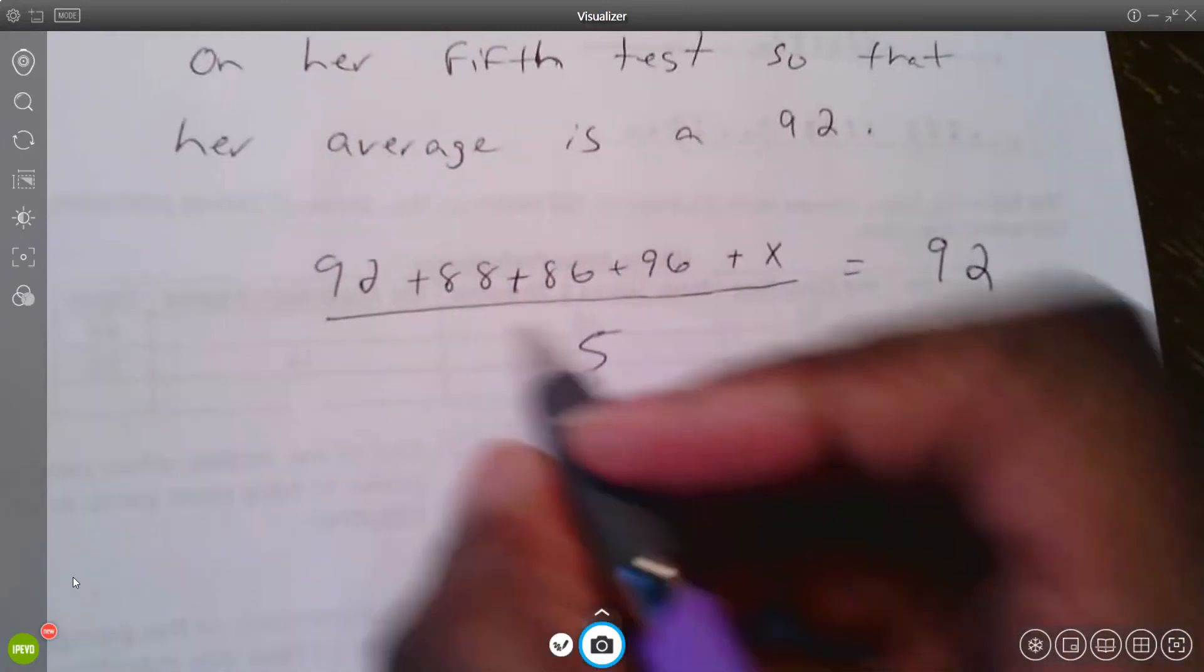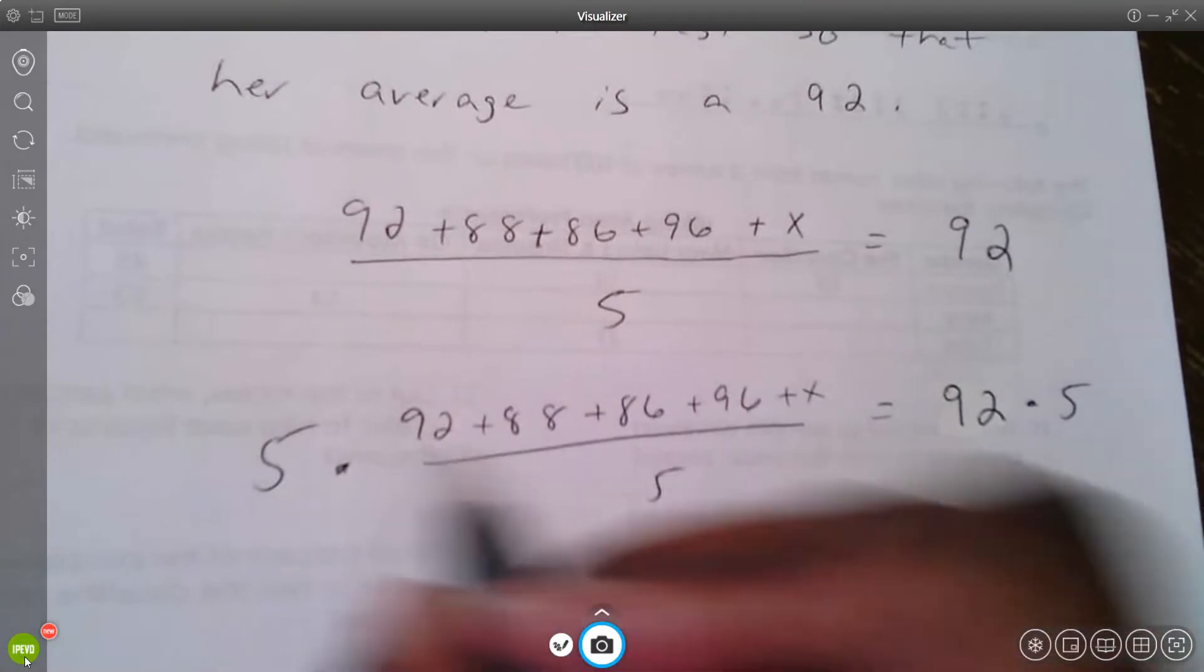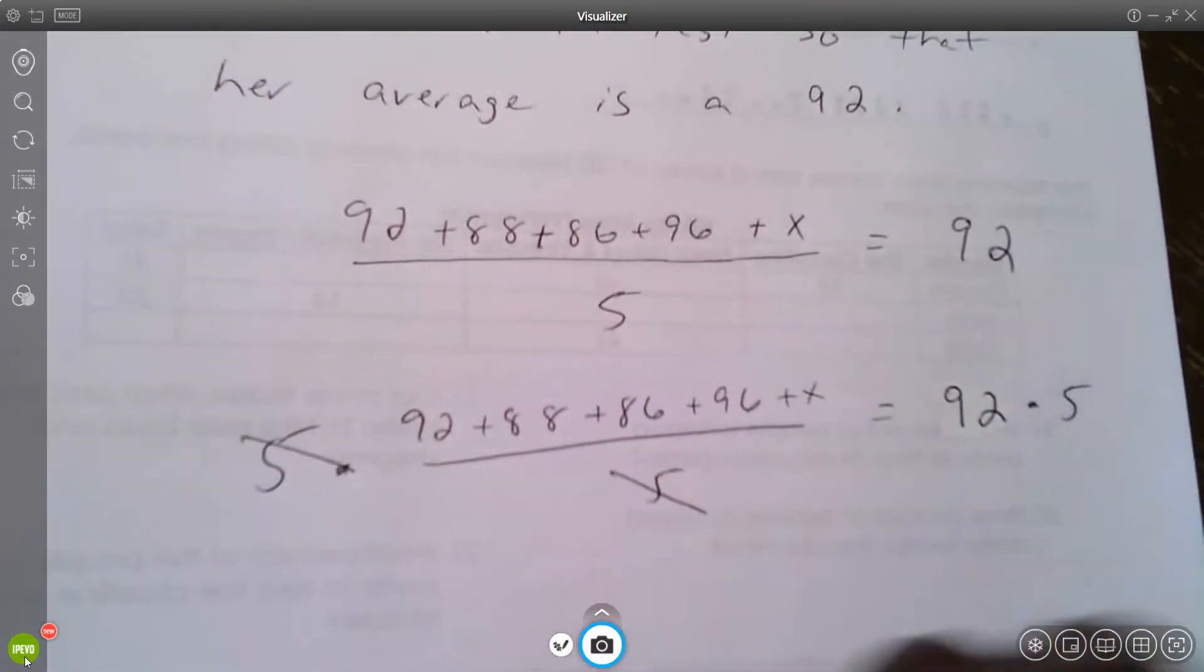And you wind up getting this. So I can multiply both sides by five so that these fives cancel each other out, because that's really five over one, so they cancel each other out.